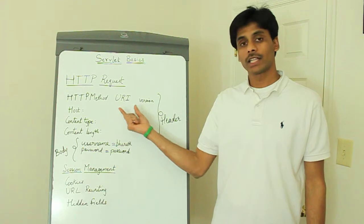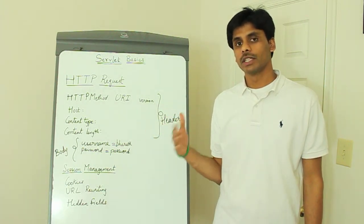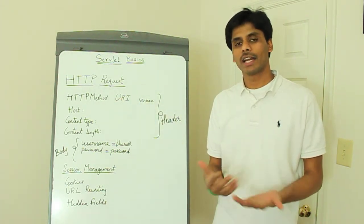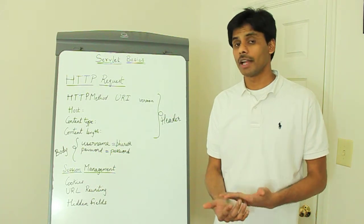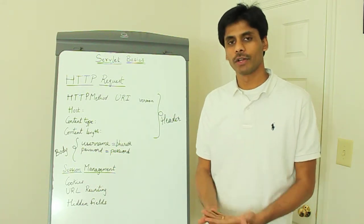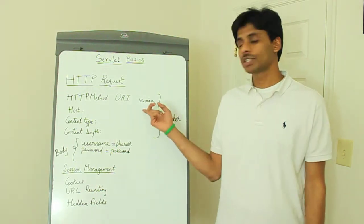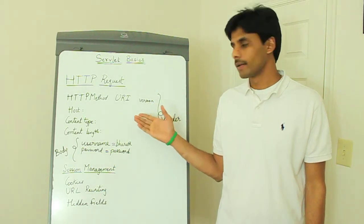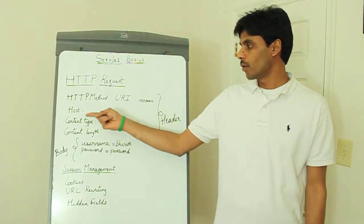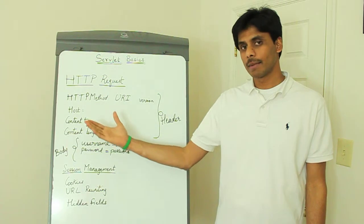The URI is actually the resource for which this request is going in. That could be a validate login.jsp page or validate login.do if you are using Struts Framework. And the version actually is the HTTP version. And then followed by host, that's the name of your machine.